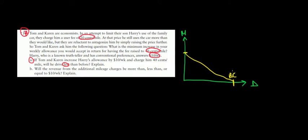This is the initial budget constraint. Now what is specific about this budget constraint? This happens when the fee is 20 cents per mile.